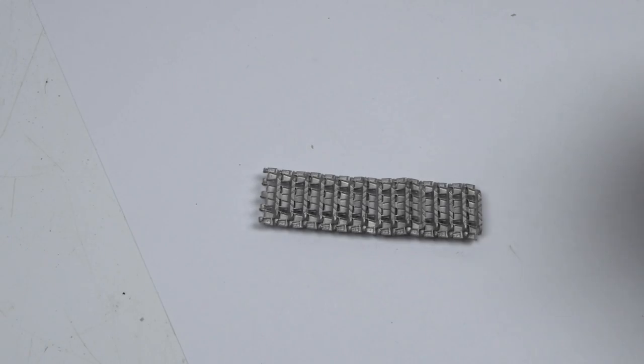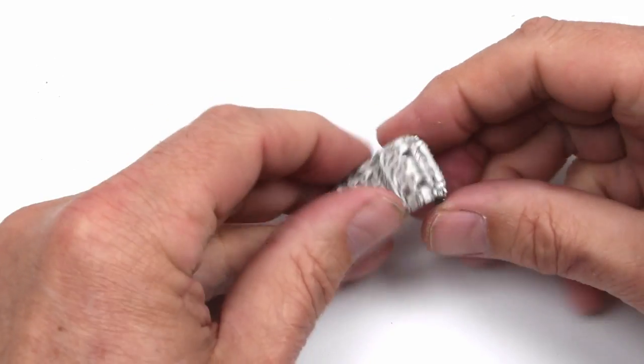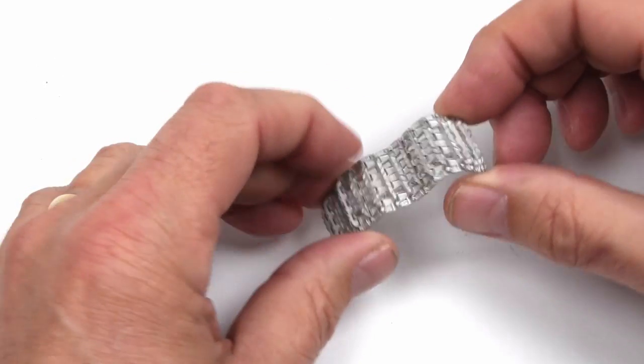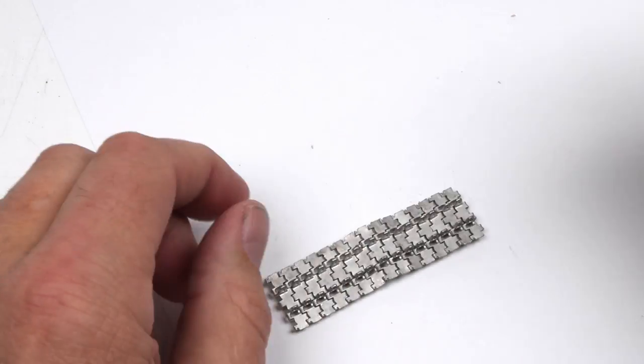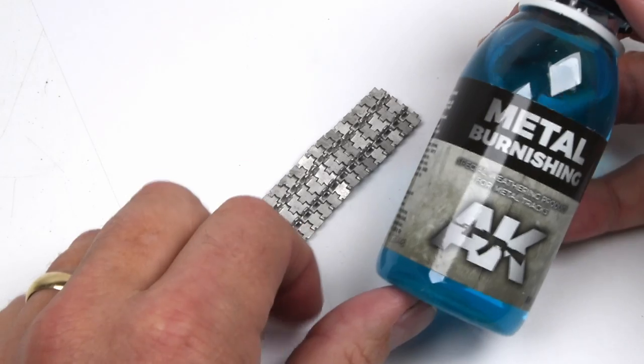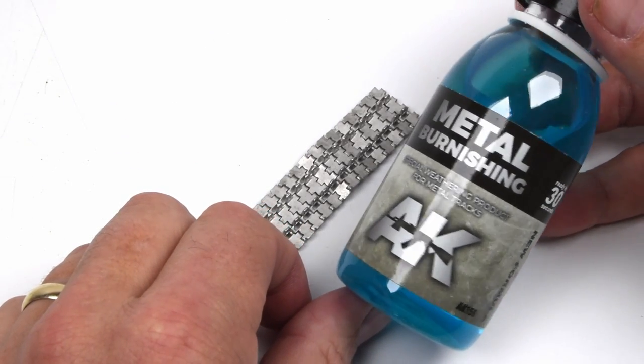The use of metal tracks on our models has become very popular. Companies such as Fru Model, Master Club, Warp Model and many others provide these highly detailed workable tracks and they're great. Problem is that the color is a little bit off and it takes a lot of work to paint something like that.